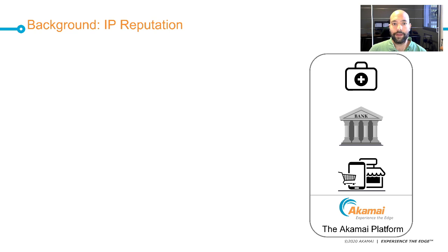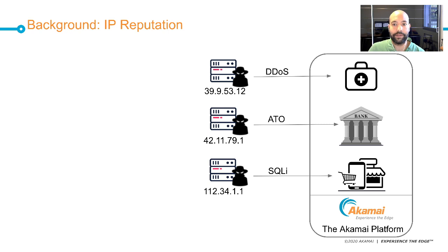To do that, we first need to go over the concept of IP reputation. We start with the Akamai platform, which is the largest CDN, used to host websites related to healthcare, banking, finance, and e-commerce. The websites hosted on the Akamai platform are typically subject to various attacks by bots such as distributed denial of service, account takeover, and SQL injection.